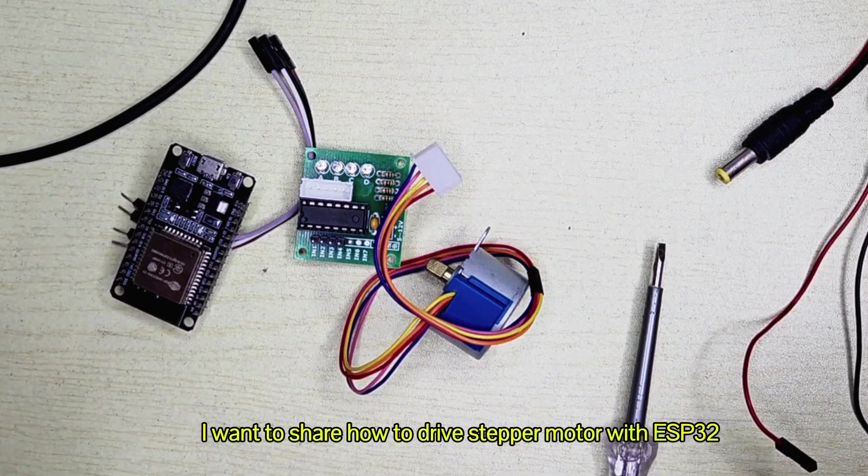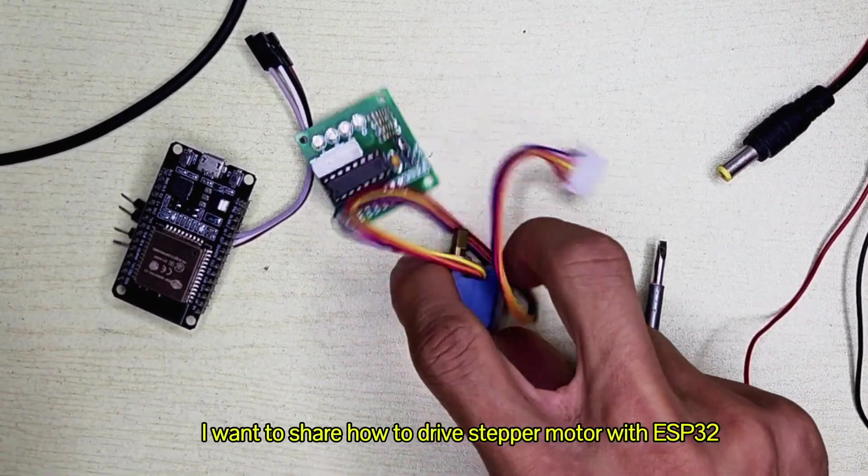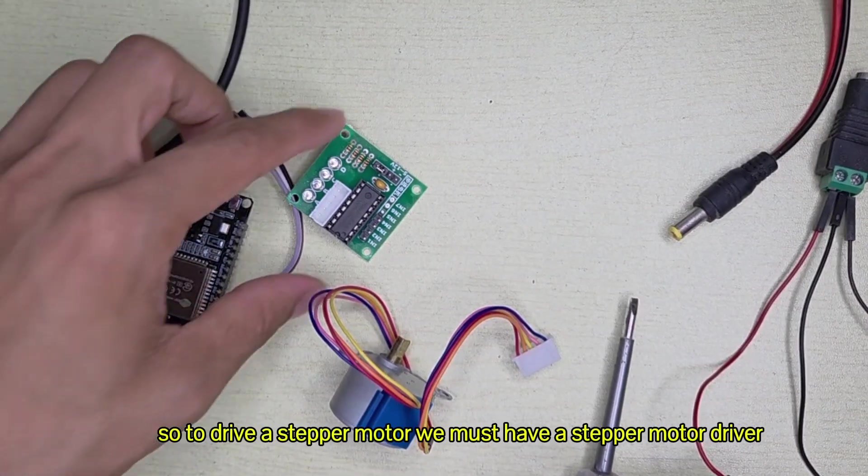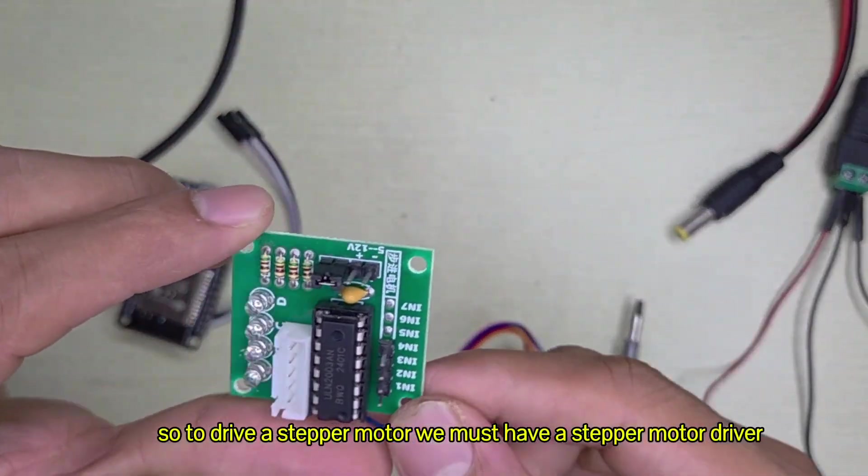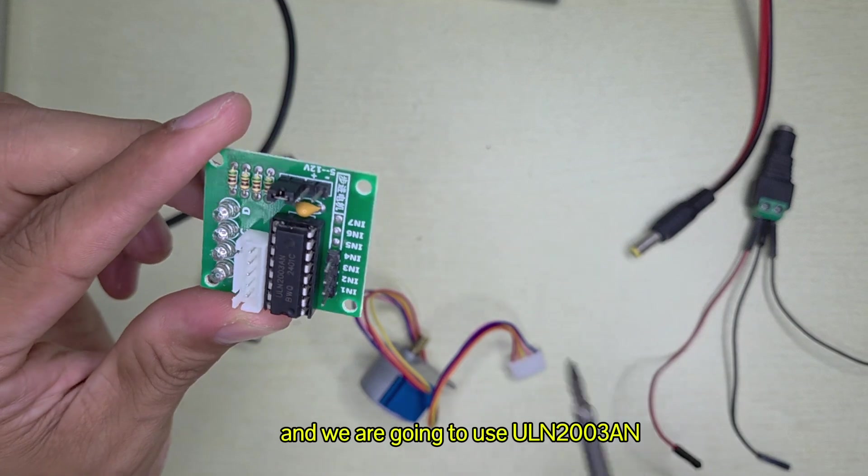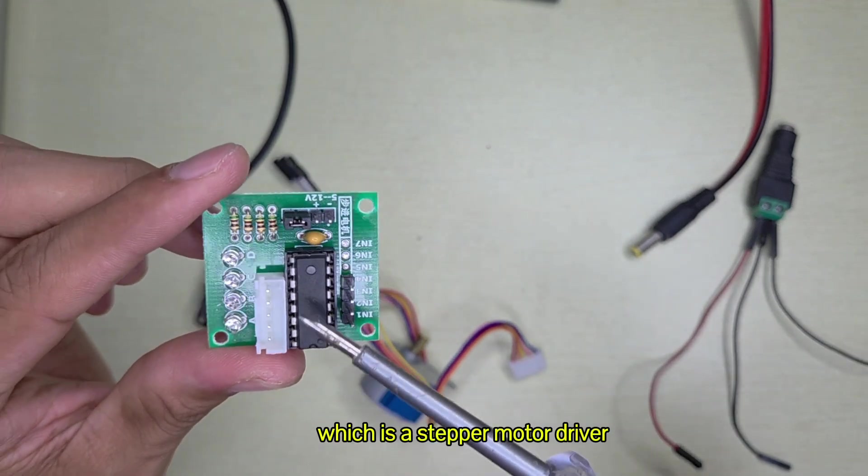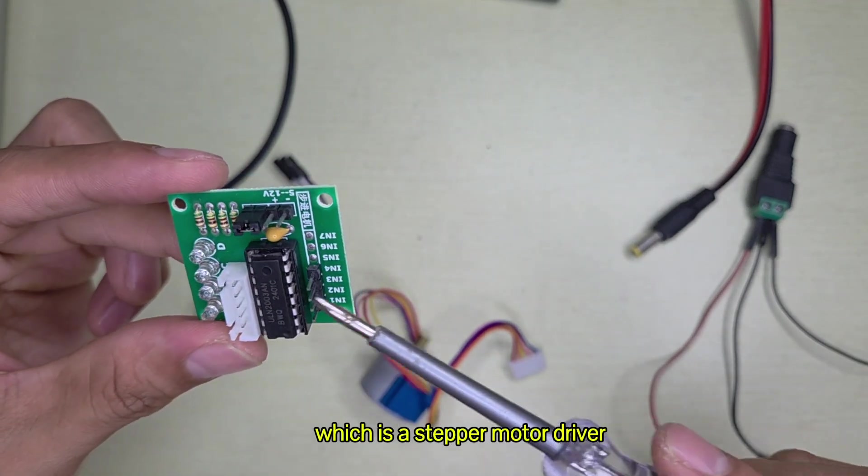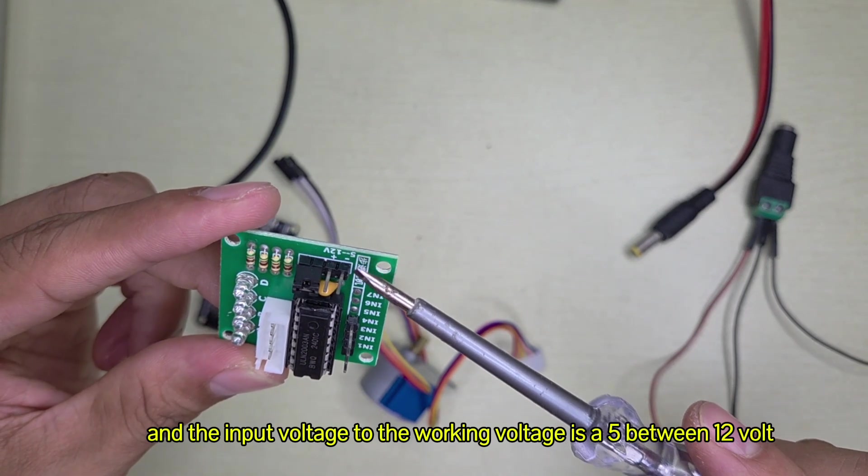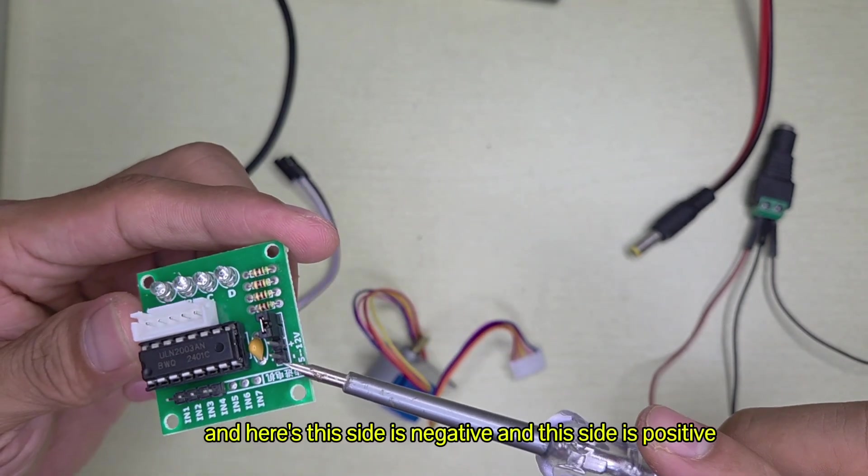Today in this video I want to share how to drive a stepper motor with ESP32. To drive a stepper motor we must have a stepper motor driver, and we are going to use ULN2003N which is a stepper motor driver. The input voltage or working voltage is 5 to 12 volts.